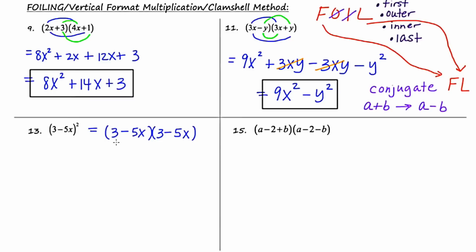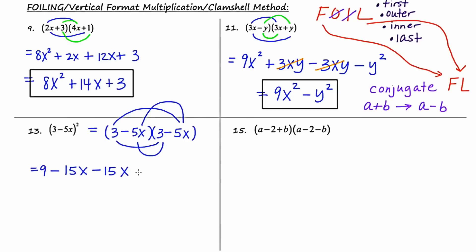I'll multiply the first together: 3 times 3 is 9. Then the outer: 3 times negative 5x is negative 15x. Then the inner: negative 5x times 3 is negative 15x again. And last: negative 5x times negative 5x is positive 25x squared. Scanning for like terms and rewriting in descending exponential order, I end up with 25x squared minus 30x plus 9.